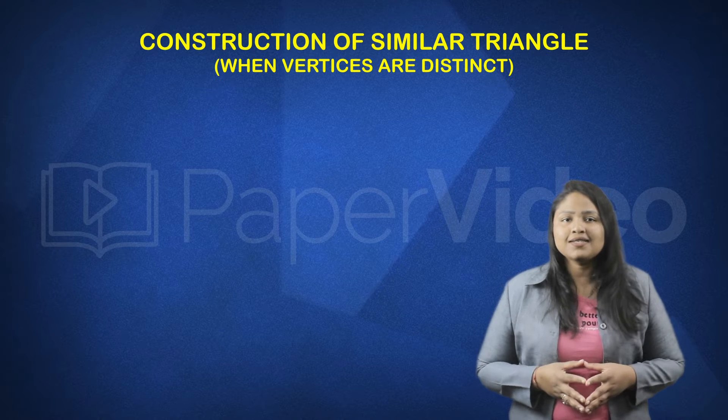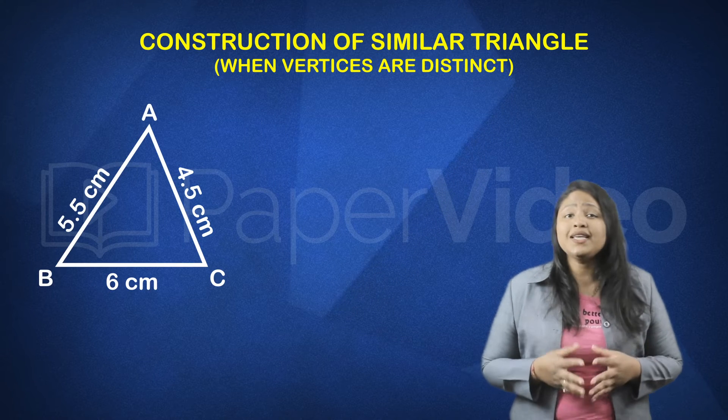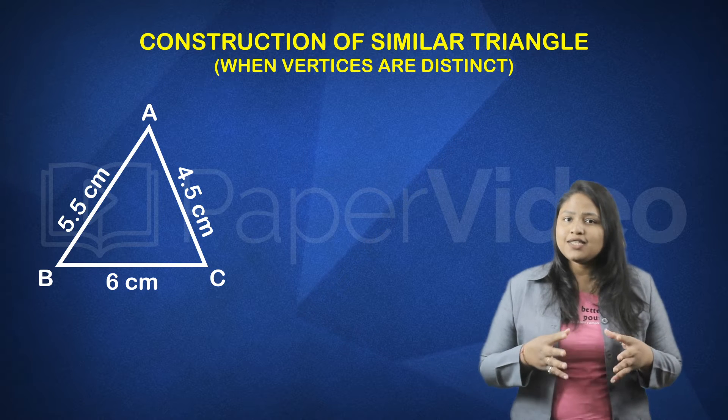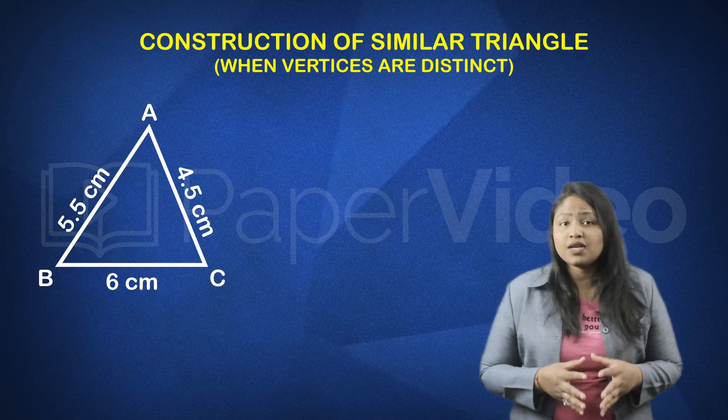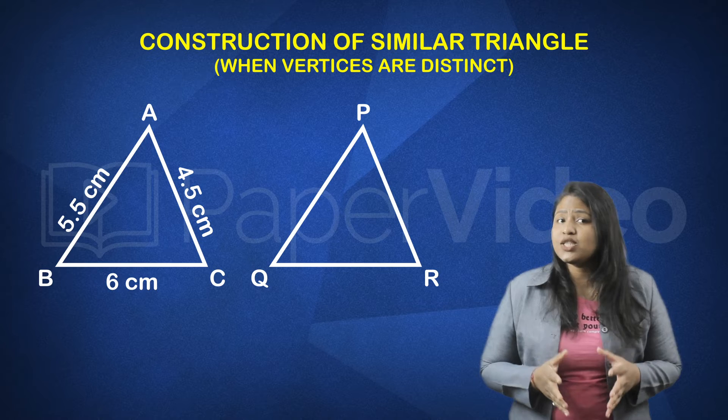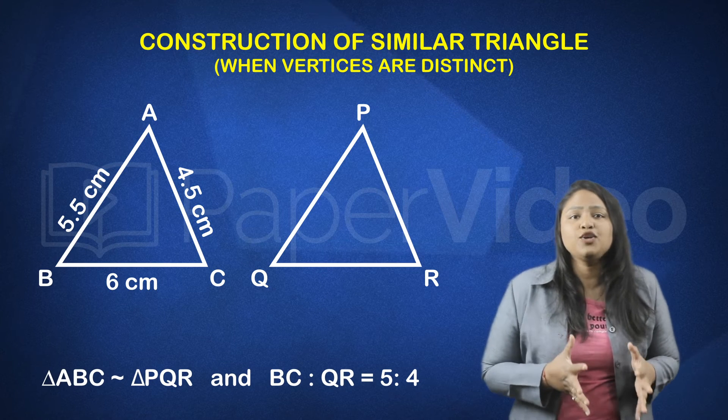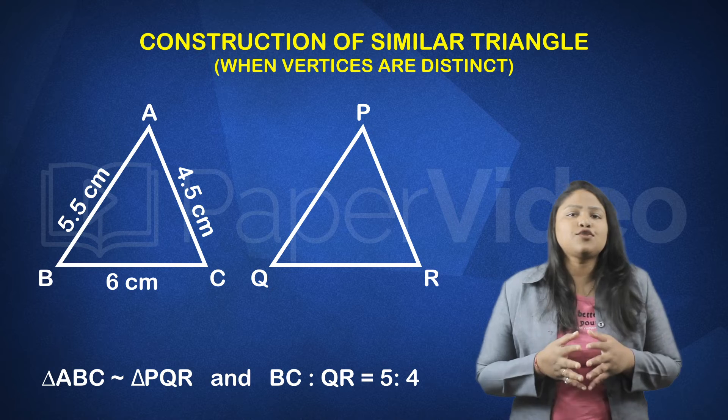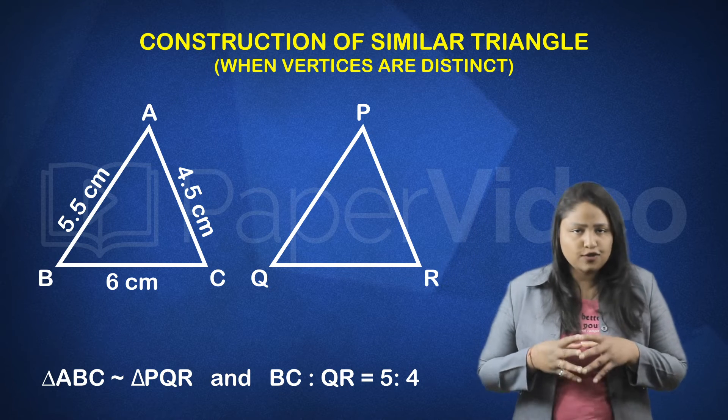For this let's consider triangle ABC with these dimensions. Let's suppose we are asked to construct triangle PQR such that triangle ABC is similar to triangle PQR and BC is to QR equals to 5 is to 4.